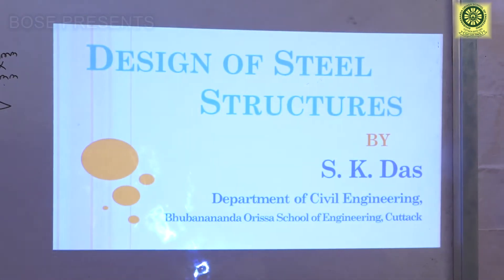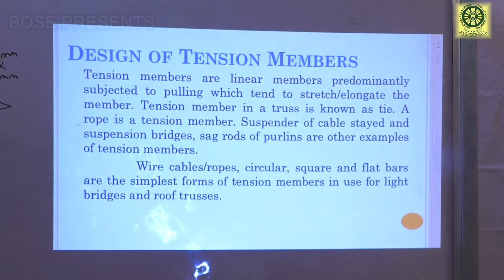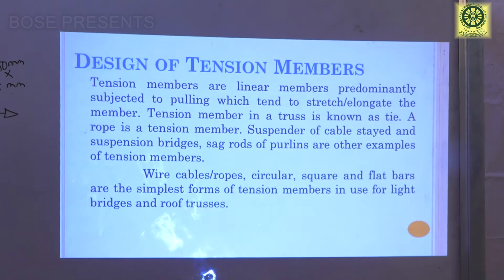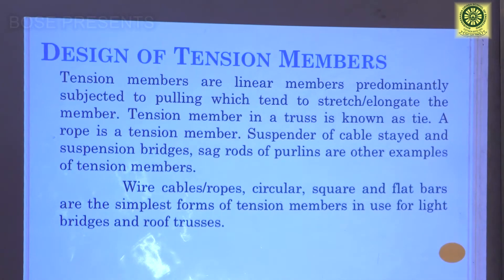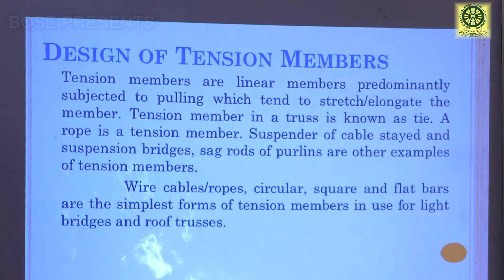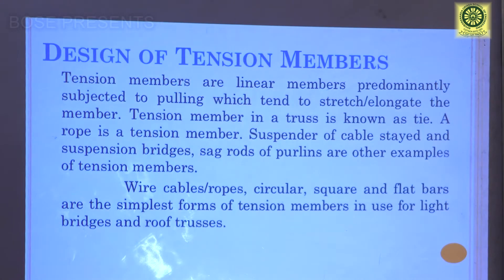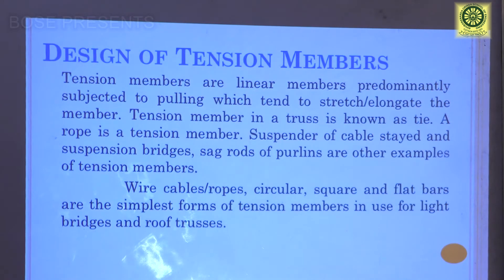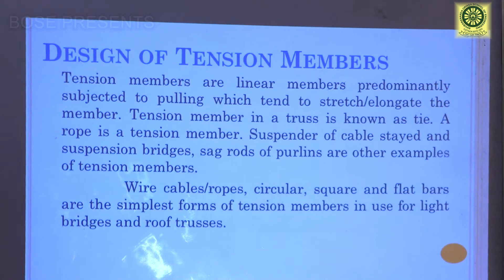Before going to tension members, we should have some basic knowledge about what a tension member is. Tension members are linear members predominantly subjected to pulling, which can stretch or elongate the member — that means members generally subjected to tension or pull. A tension member in a truss is known as a tie. A rope is a tension member; suspenders of cable-stayed bridges, suspension bridges, sag rods, and purlins are other examples. Wire cables, ropes of circular or square section, and flat bars are the simplest forms of tension members used nowadays.